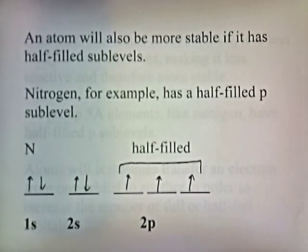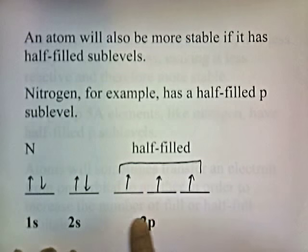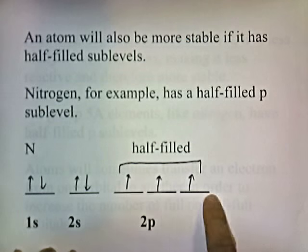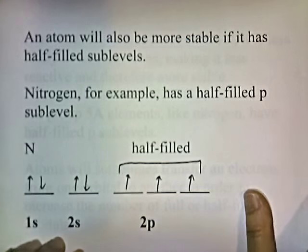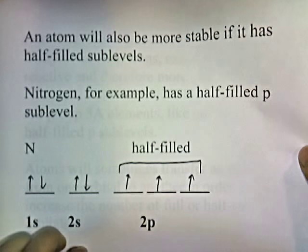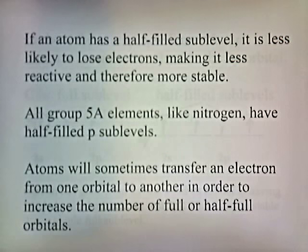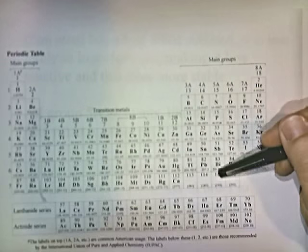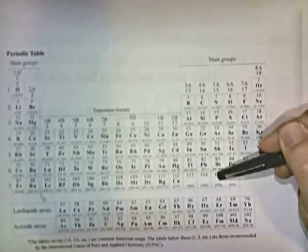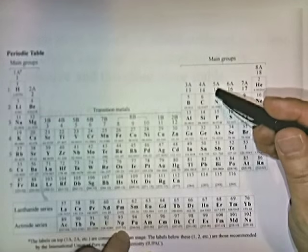An atom will also be more stable if it has half-filled sublevels. Nitrogen, for example, has a half-filled P sublevel. The P sublevel can hold six electrons, and there are only three here, so this P sublevel is half-full. When the P sublevel is half-full, it grants a certain stability to the element. If an atom has a half-filled sublevel, it is less likely to lose electrons, making it less reactive and therefore more stable. All group 5A elements, like nitrogen, have half-filled P sublevels.